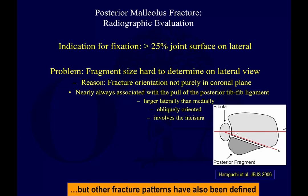Many of the typical posterior malleolus fractures look like this — here is anterior, here is posterior. Here's the posterior fragment and the posterior inferior tib-fib ligaments. You can see the Volkman's fragment here, which is what this fragment is known as. It typically has this fracture angulation — as line A shows, it's not parallel to the x-ray beam on a lateral x-ray; it is angled, typically like line B.